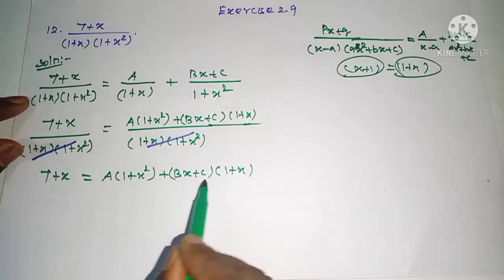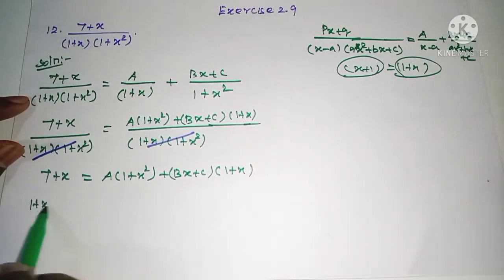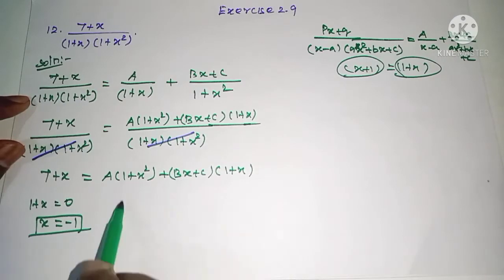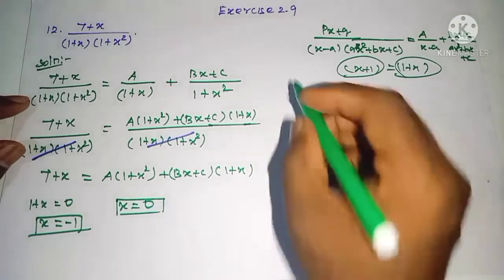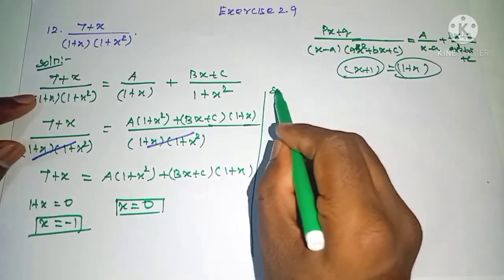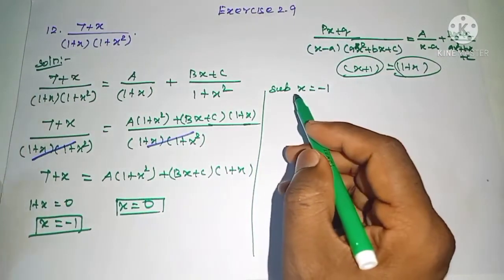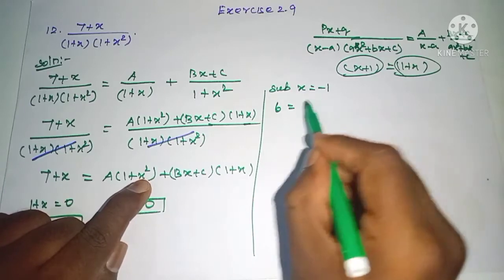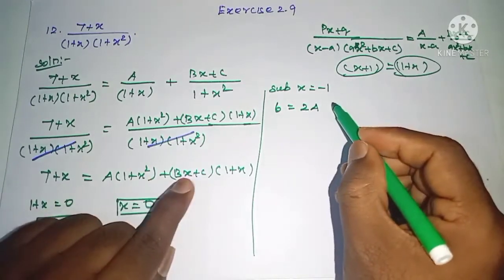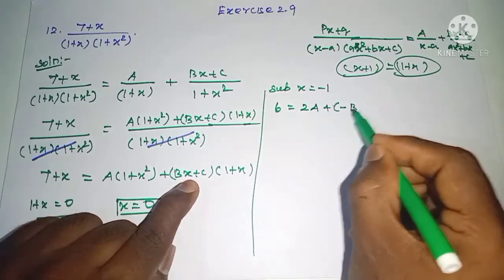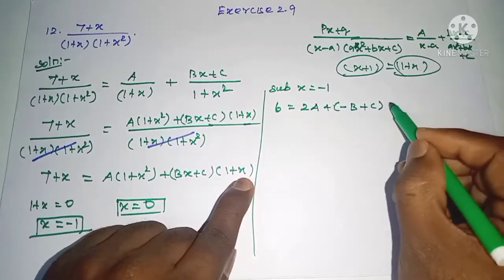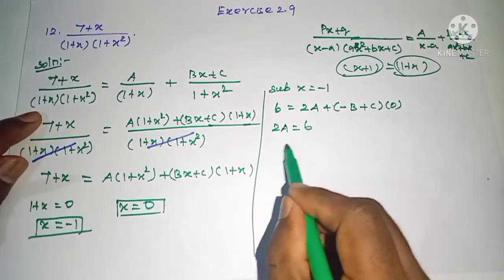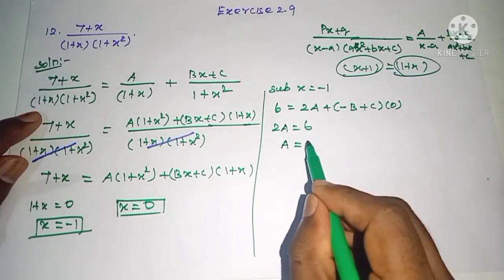The critical point: we substitute so that (1 + x) equals 0, giving x equals minus 1. Substituting x = -1: the left side gives 7 + (-1) = 6. On the right side, A(1 + (-1)²) = A(1 + 1) = 2A, and the (Bx + C)(1 + x) term becomes 0. So 2A = 6, therefore A = 3.